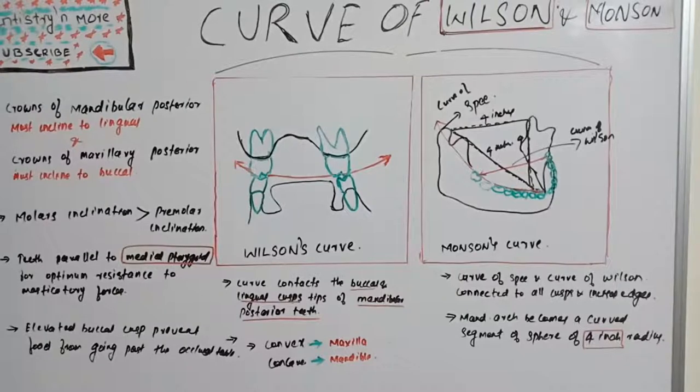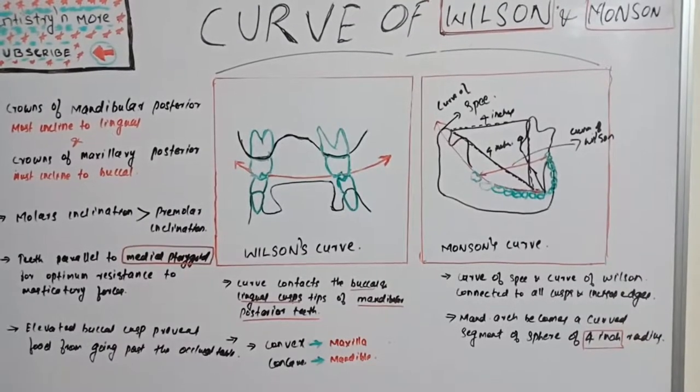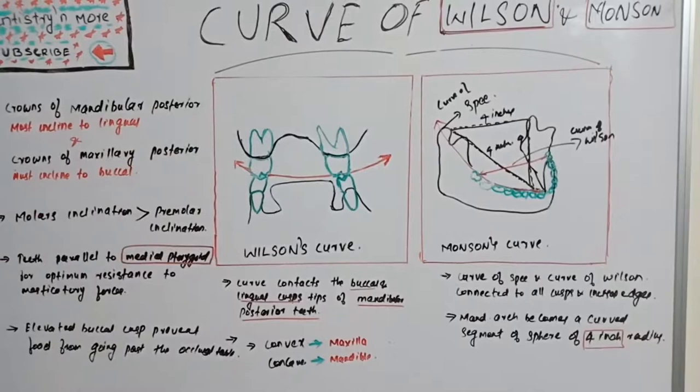This curve runs across the palatal and buccal curves of maxillary molars. That's all about the curve of Wilson and curve of Monson.